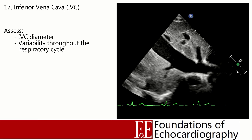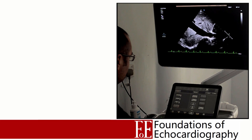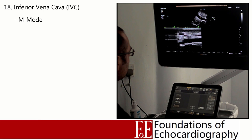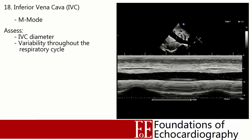To measure the IVC, we can do this in 2D or M-mode. In 2D, freeze the image, find the point of maximum diameter, and measure at 90 degrees to the IVC walls, 2 centimetres below the IVC–RA junction. For the 18th measurement in the BSE Level 1 minimum data set, place the cursor through the IVC and capture an M-mode graph. Note that measuring obliquely through the IVC will overestimate the diameter.